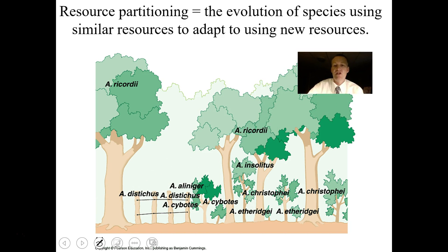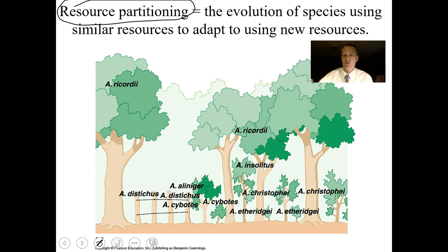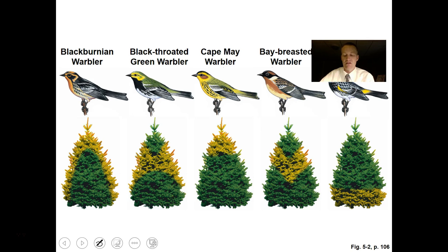Resource partitioning is the evolution of species using similar resources to adapt to new resources. A study on anoles in the Caribbean islands shows a whole adaptive radiation where each different species exploits a different resource — some spend 50% or more of their time high up in trees, others in very distinct parts of the tree — minimizing competition for those resources.